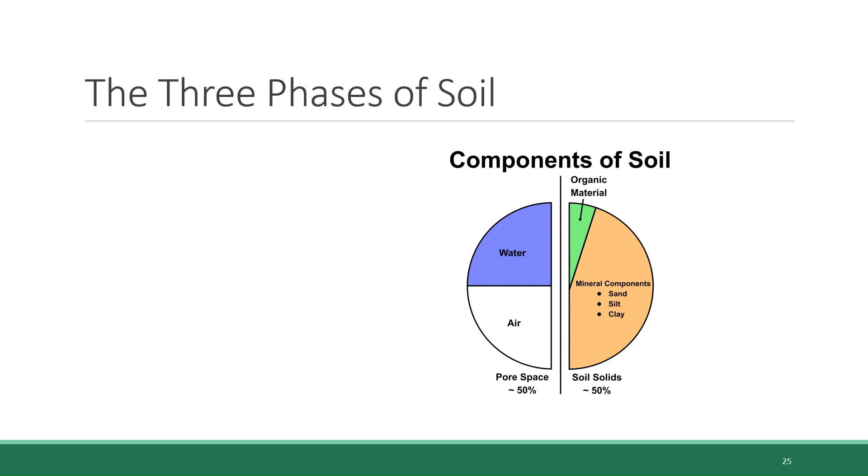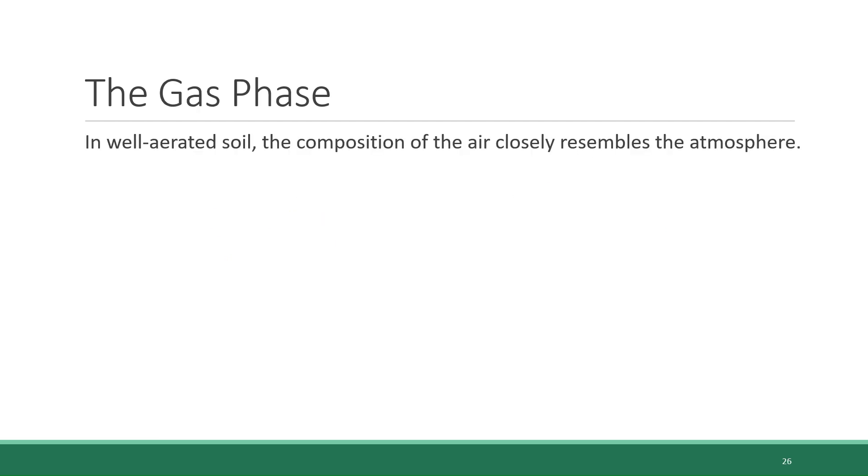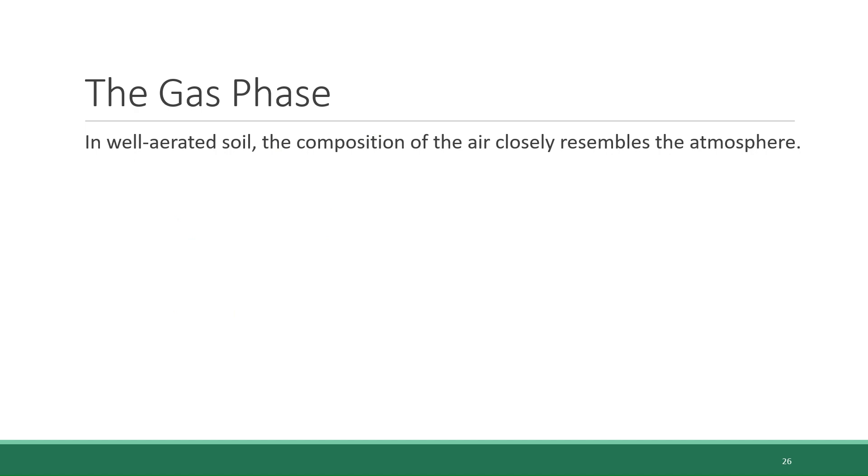The last dimension of the three phases of soil that we need to talk about is the gas phase, or in other words, air. In soil that is well aerated, the air that is found in the pores between the particles of soil's solid phase look more or less the same as the air in the atmosphere. That is, mostly made of nitrogen, with a significant amount of oxygen and also carbon dioxide. That's because gases will readily move in and out of the pores found in soil through a process called diffusion, which is the movement of molecules from areas of high concentration to low concentration. So if the air content of soil is being depleted by the metabolism of soil organisms, as long as the soil is well aerated, then more gas will move in and replenish what's being used up.